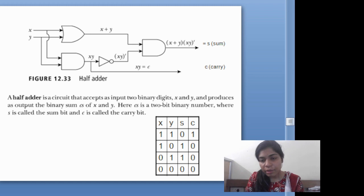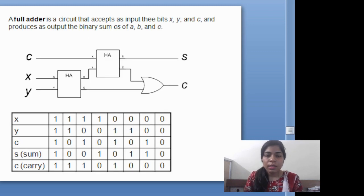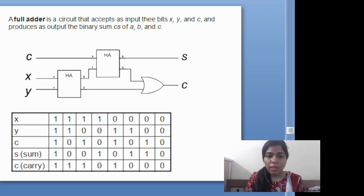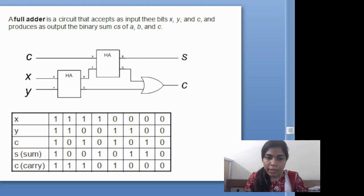Sum is one and carry is zero. Similarly, we can calculate: if we give zero as X and one as Y, then sum will be one and zero will be the carry. This is the half adder circuit. What will happen if we use two half adder circuits? There will be X and Y, and carry is going to the next half adder. At the end, we will get sum and carry. So input will be three: X, Y, and Z, and at the output we will get sum and carry.